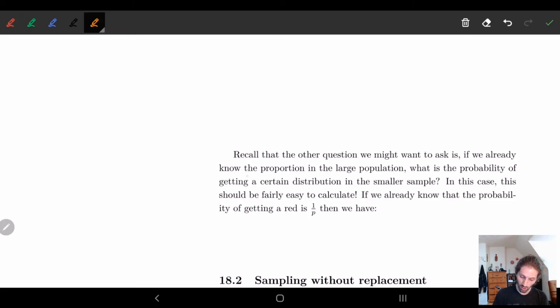So this is, we know R. We know big R. What is the probability of getting a certain distribution in the smaller space?